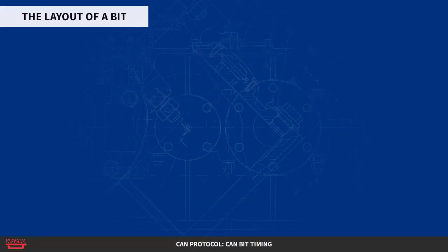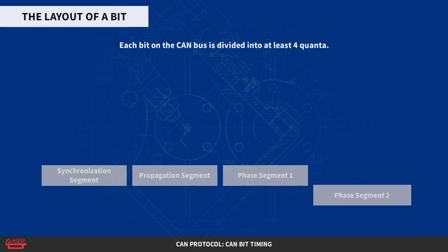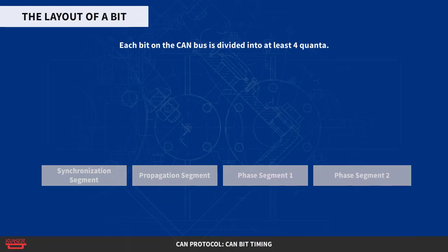The layout of a bit. Each bit on the CAN bus is, for timing purposes, divided into at least four quanta. The quanta are logically divided into four groups or segments: the synchronization segment, the propagation segment, the phase segment one, and the phase segment two.